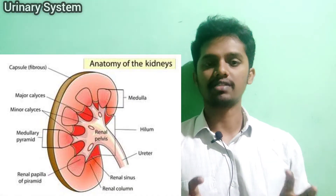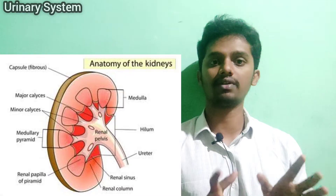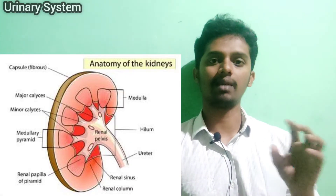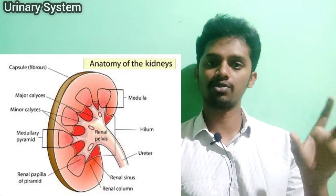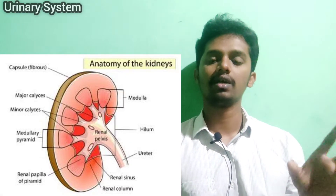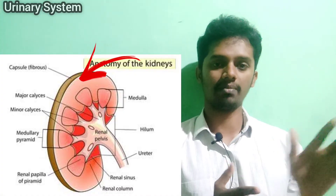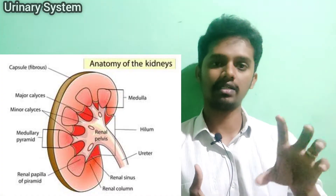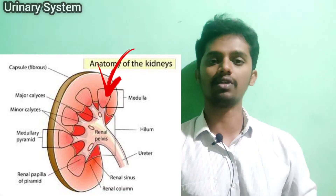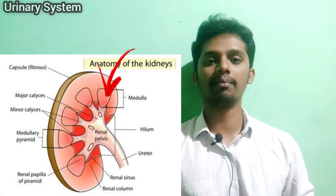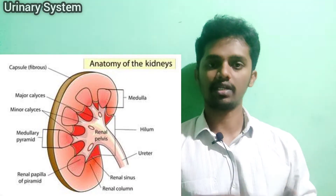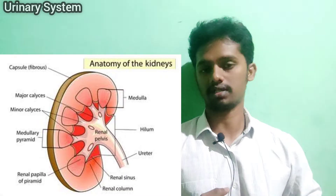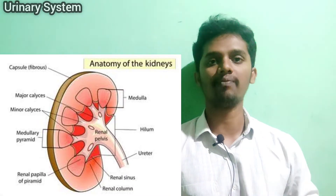We can divide the kidney into two areas. If you look at the outer area, that is the renal cortex. The center or inner area of the kidney is the renal medulla. So the two major divisions of the kidney are the renal cortex and the renal medulla.